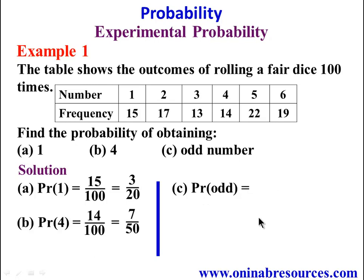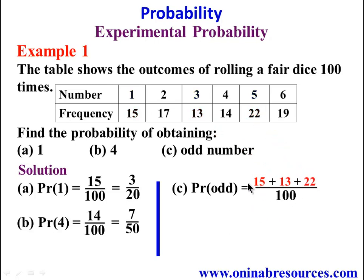Probability of obtaining odd numbers. The odd numbers on the faces of the dice are 1, 3, and 5. So we are going to add their respective frequencies, that is 15, 13, and 22, to get the numerator of the fraction of the probability, and 100 will still be the denominator. So we have 15 plus 13 plus 22 over 100. Summing up, this is 28 plus 22, that gives 50 over 100, which gives 1 over 2. And that's all for example 1.